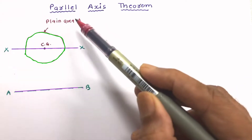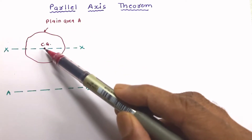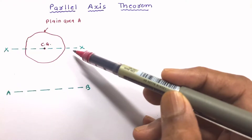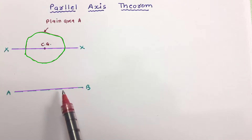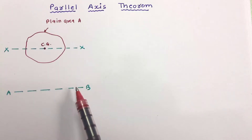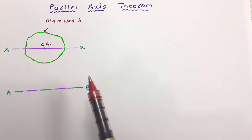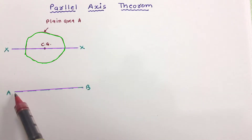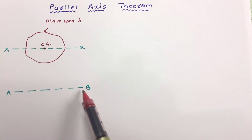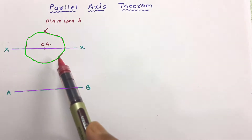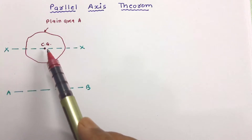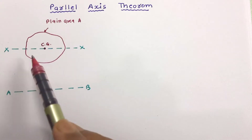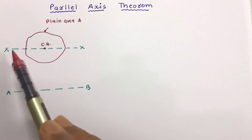Here one plane area is there, which is having area A. This point is the centroid of the lamina. This is the centroidal axis parallel to the X axis passing through the centroid of the lamina — the centroidal XX axis. There is also an axis which is parallel to the centroidal axis but some distance away from it. The Parallel Axis Theorem is useful when the moment of inertia about one axis is known and we want to determine the moment of inertia of the same lamina about some other axis parallel to that axis.